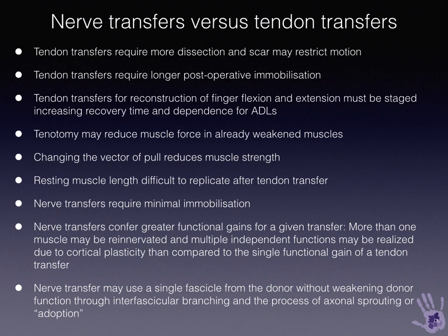Tenotomy can reduce the muscle force, whereas a nerve transfer actually restores function to the muscle in its natural resting vector and muscle tone. The resting muscle length is very difficult to replicate after tenotomy and tendon transfer. Nerve transfers don't require much immobilization, and certainly not much rehabilitation in the early phase. Nerve transfers confer greater functional gains — you can re-innervate more than one muscle and gain multiple independent functions due to cortical plasticity, whereas a tendon transfer will only regain one function. A comparison here is the FCR tendon transfer to the EDC for finger extension versus a nerve transfer using an FCR, palmaris, and FDS fascicle that can regain independent EDC finger extension.